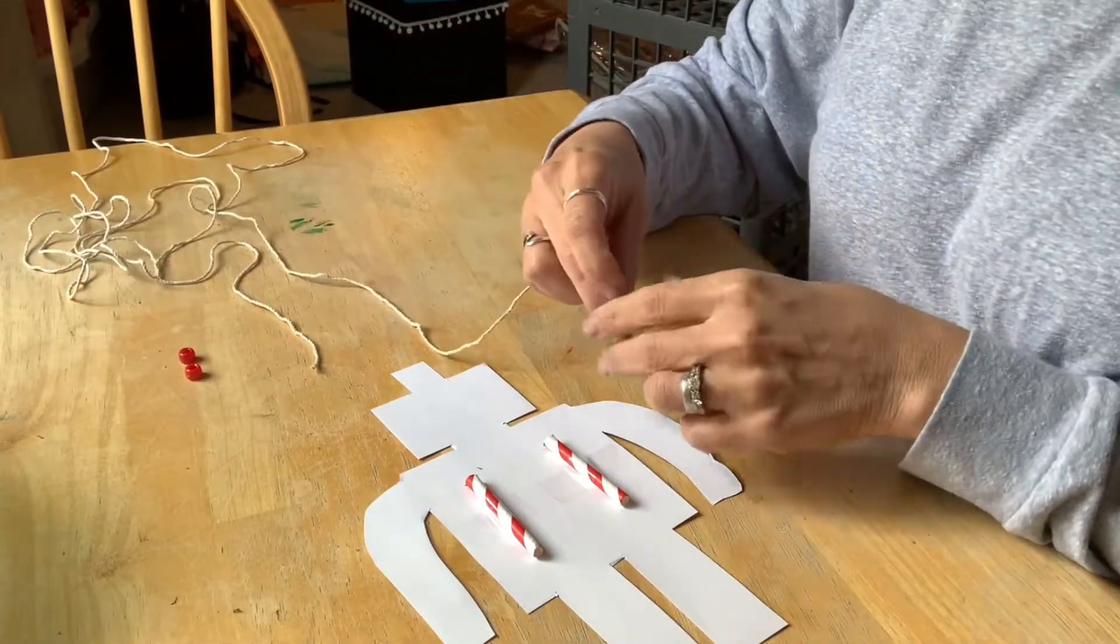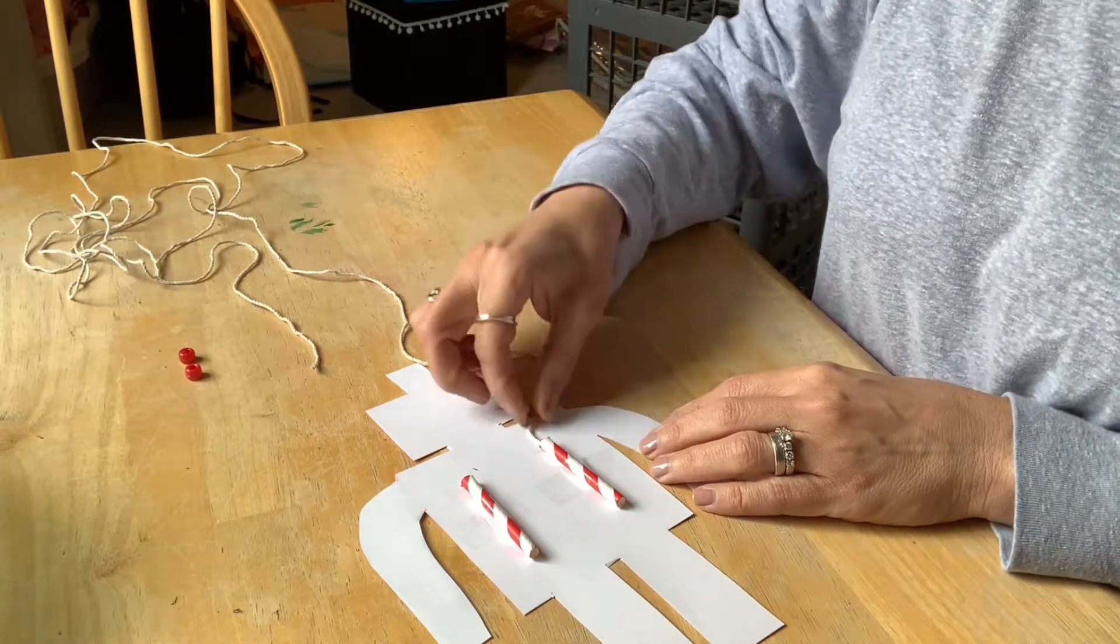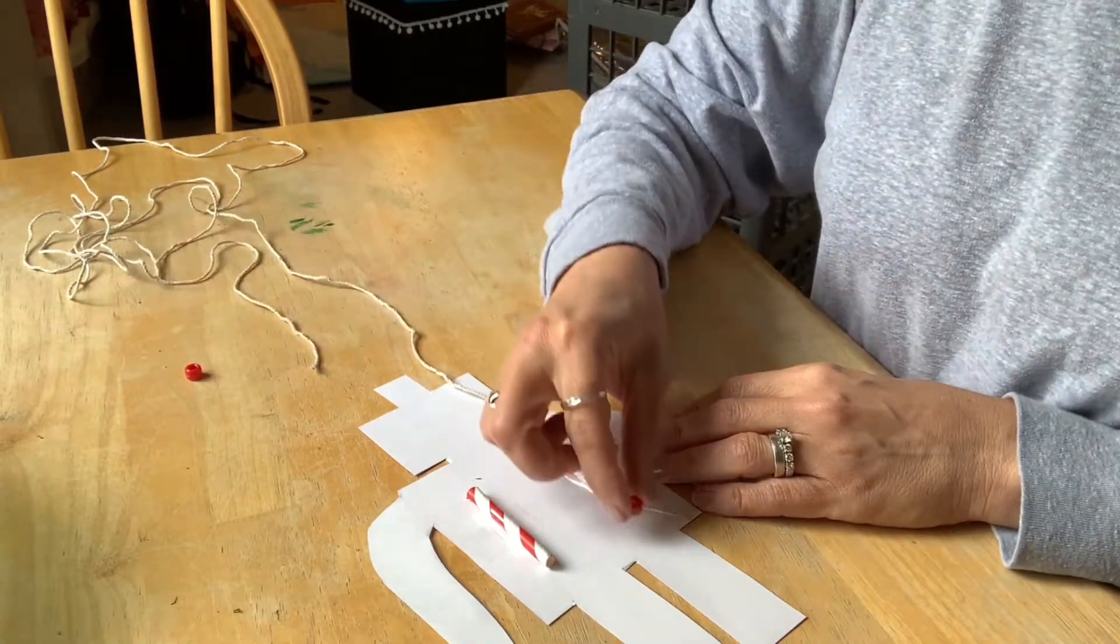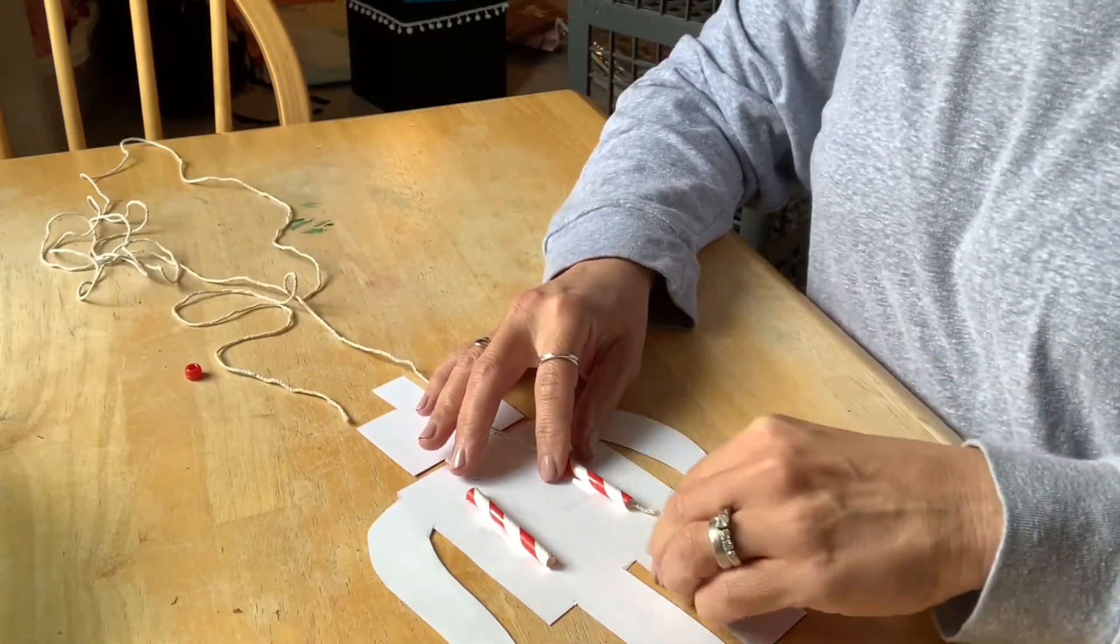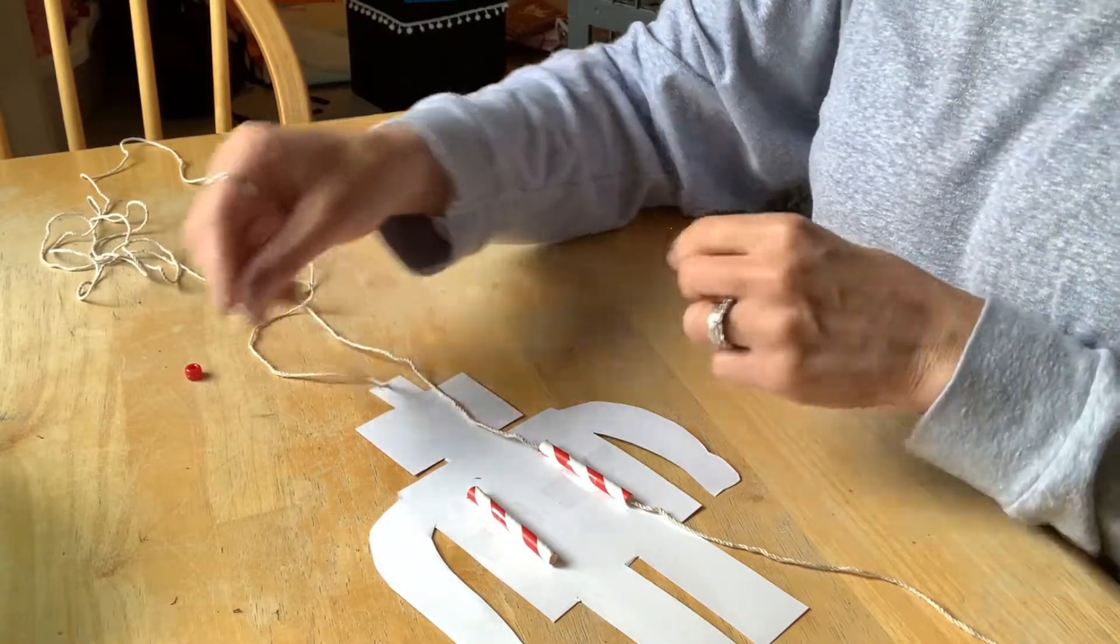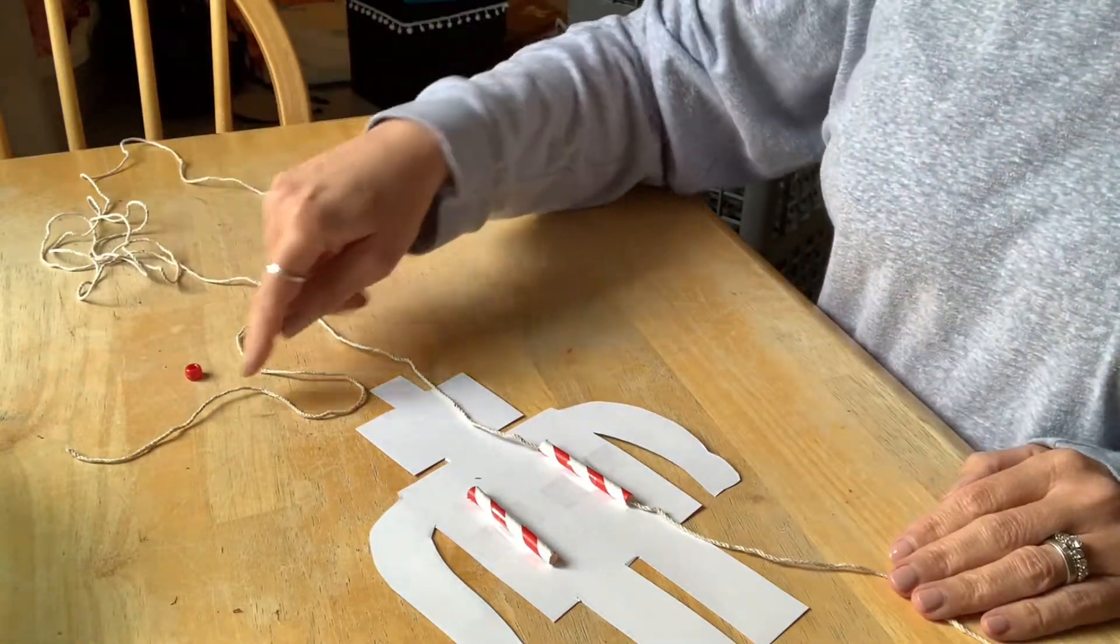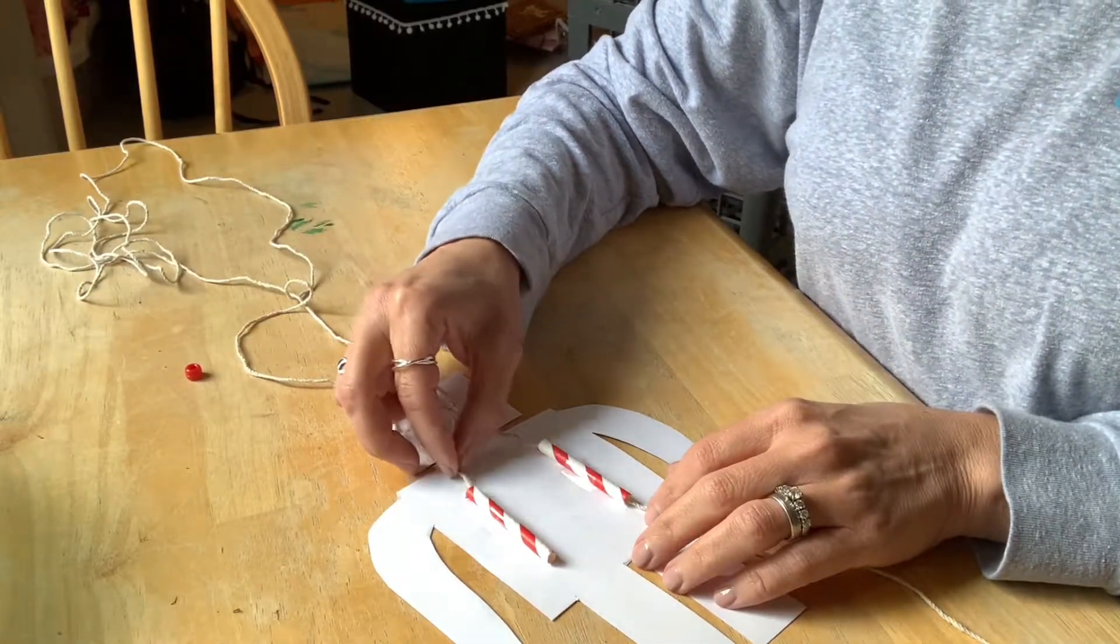Now we're ready for the string. One end of the string has to go into the straw and out the other side before we can put the bead on as a stopper. Let's thread the string first and take the other end of the string. This is all one piece and it's going to go into the other straw and through.